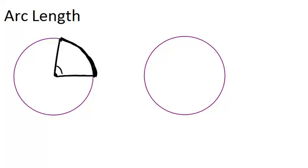So, if we knew that this central angle was 60 degrees, and the radius of the circle was 6 centimeters, how could we figure out the arc length for this arc?